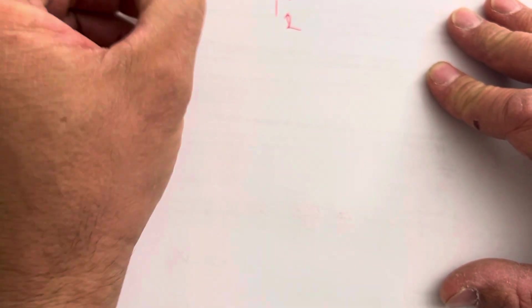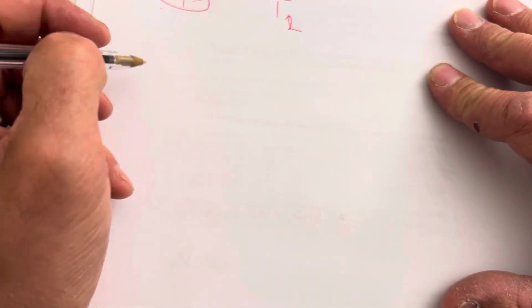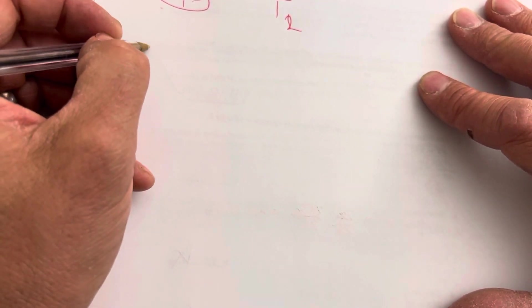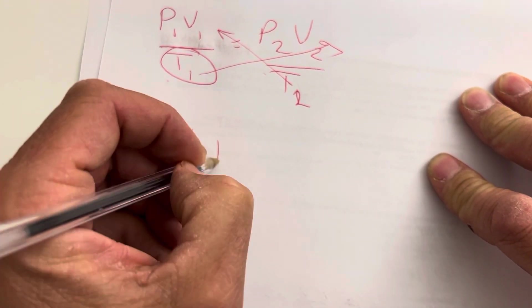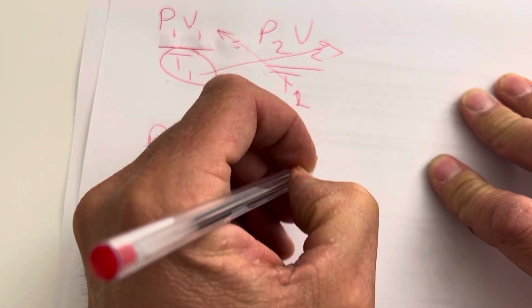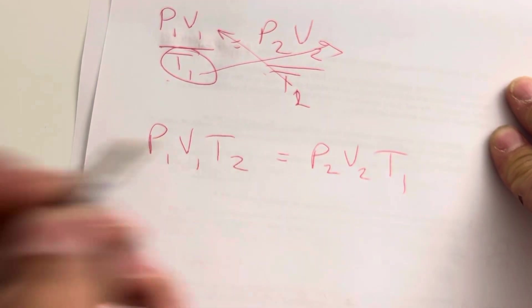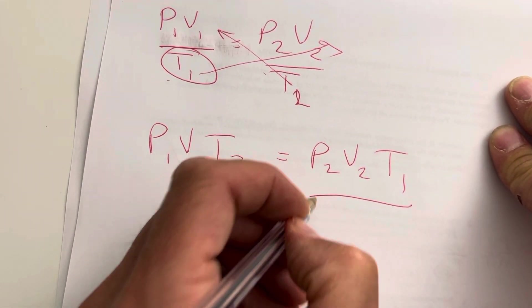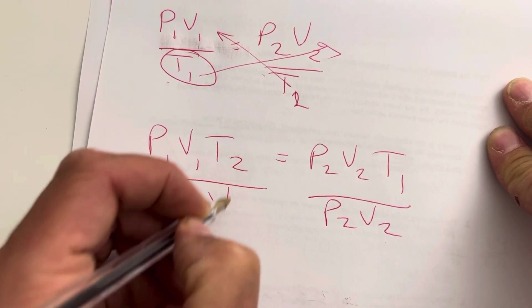We're trying to isolate T1. So the first thing we're going to do is multiply this on this side, and then multiply this on this side. So we would end up with P1 times V1 times T2 is equal to P2 times V2 times T1. So now to isolate T1, we have to divide this side by P2V2, this side by P2V2.